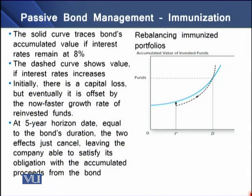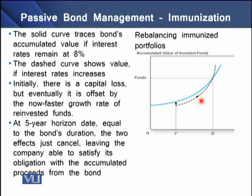On the right side of the screen, the solid curved line represents the bond's accumulated value if the interest rate remains at 8%. The dashed curved line in black shows the value if the interest rate increases: initially there is a capital loss, but eventually it is offset by the faster growth rate of the reinvested fund. At the 5-year horizon date — equal to the bond's duration — the two effects cancel, leaving the company able to satisfy its obligation from the accumulated bond proceeds.